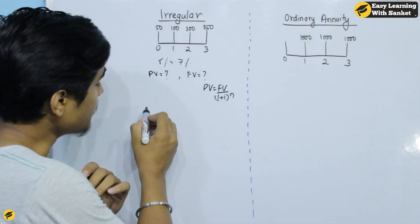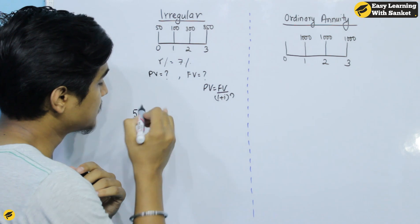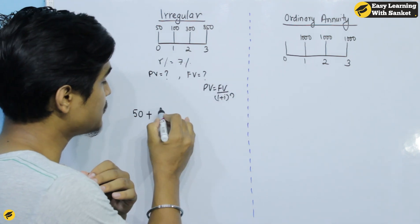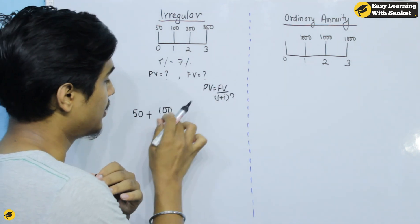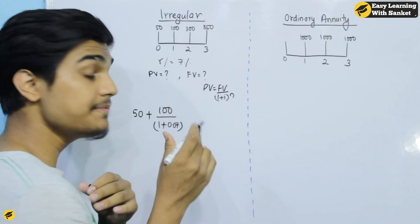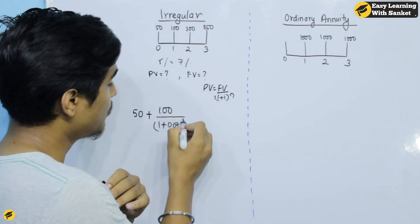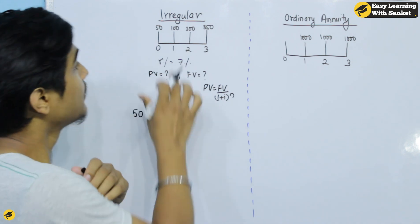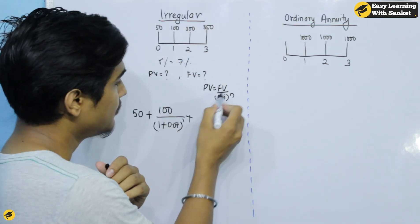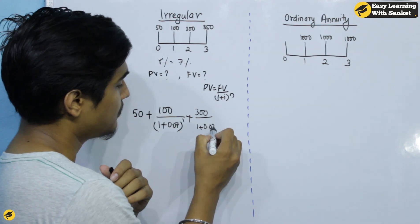So the result at year 0 is 50. Then 50 plus 100 rupees the future value. For 100: 1 plus i (0.07) to the power 1. For 300: divide by 1 plus 0.07 to the power 2.